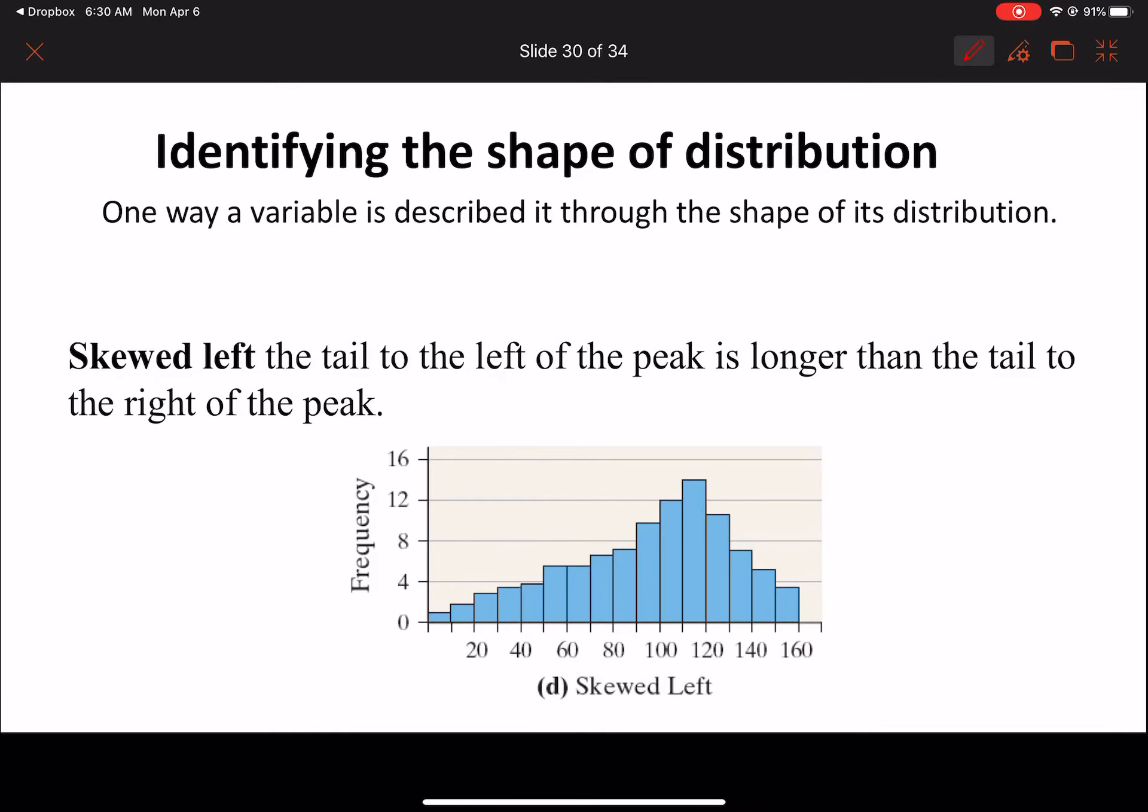Same thing with skewed left, except for just the opposite. When the tail on the left is longer than the tail on the right, and all of your data is concentrated on the right, or most of it is, this is skewed left. So once again, it's exactly the opposite of what you would expect. You would expect that skewed left would mean all your data is on the left. It is exactly the opposite. Skewed left means your tail is longer on the left.